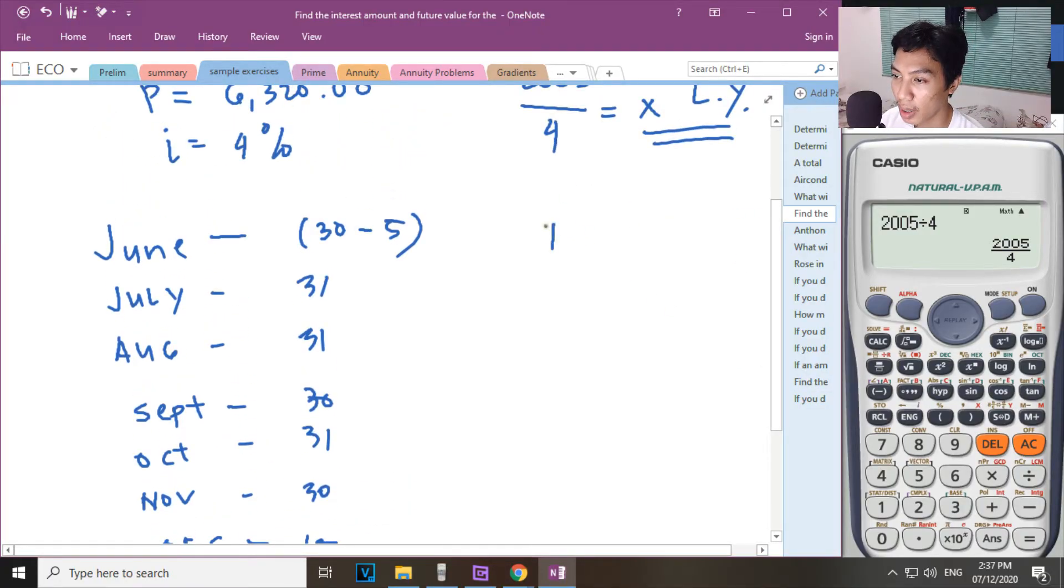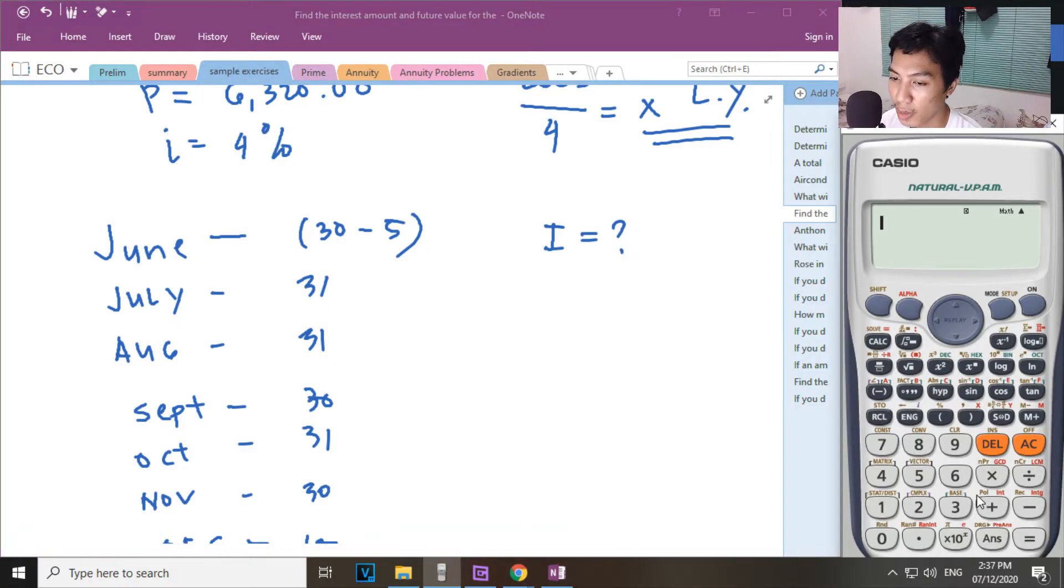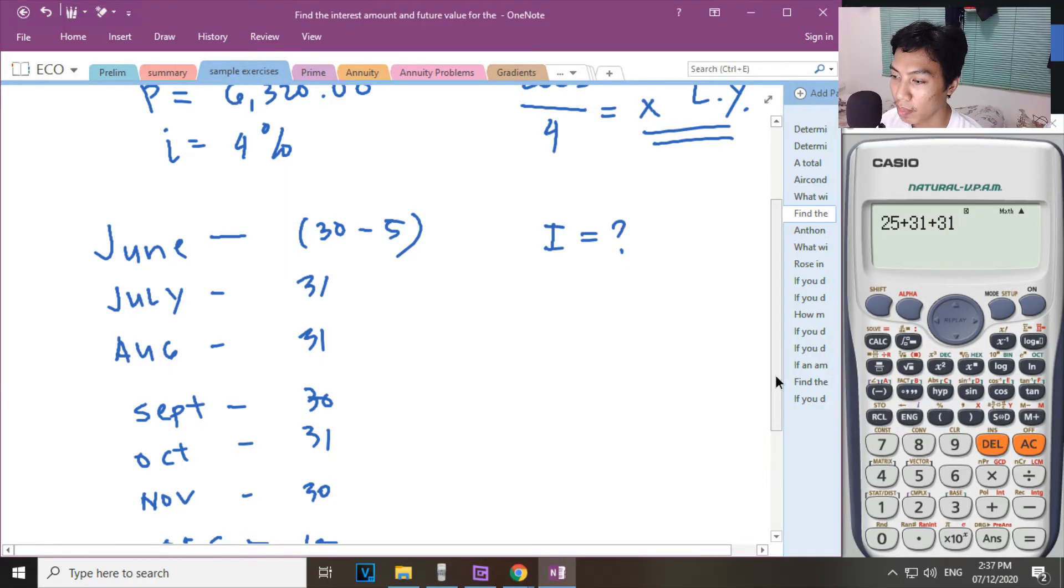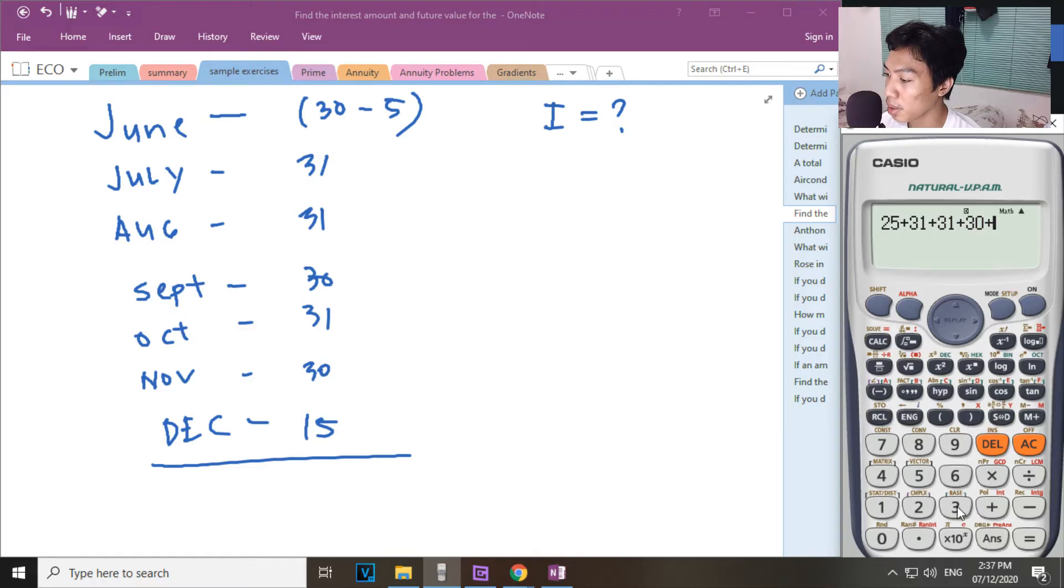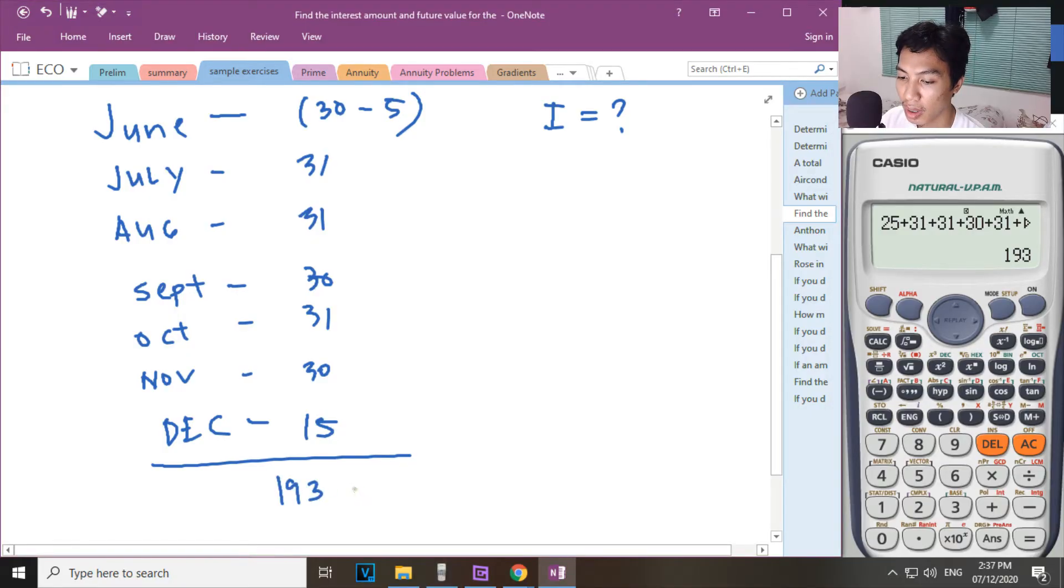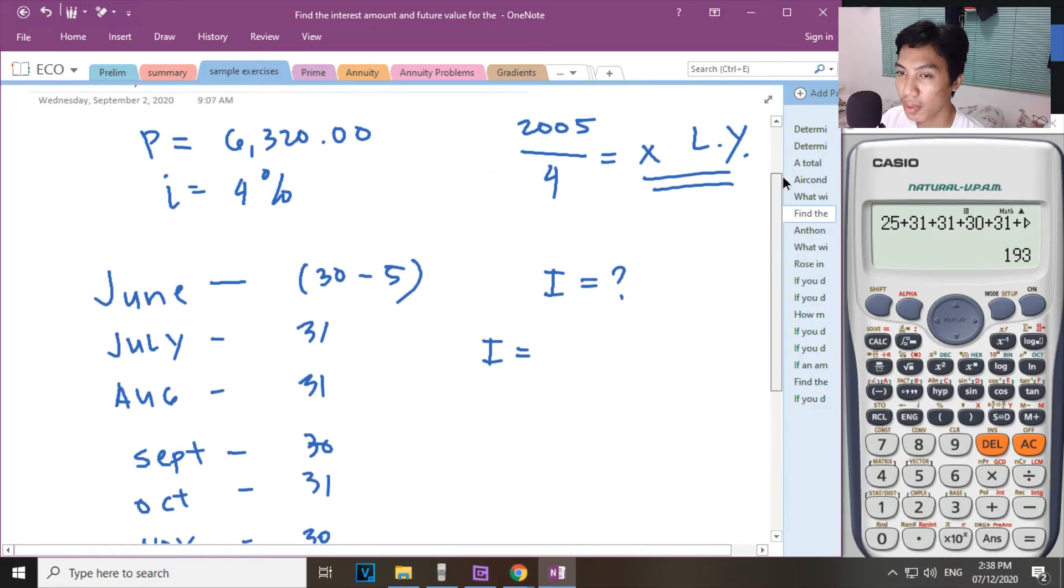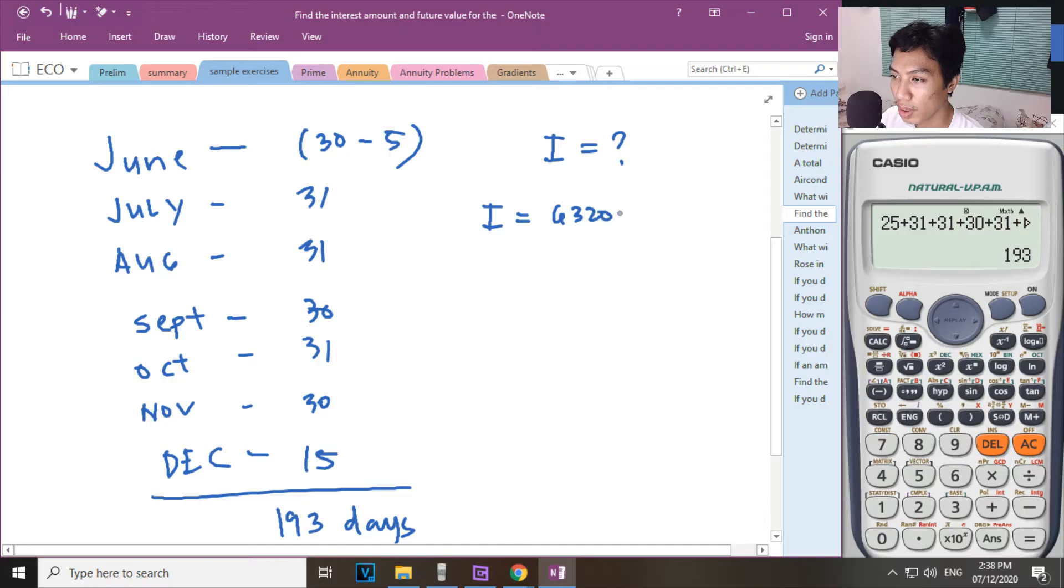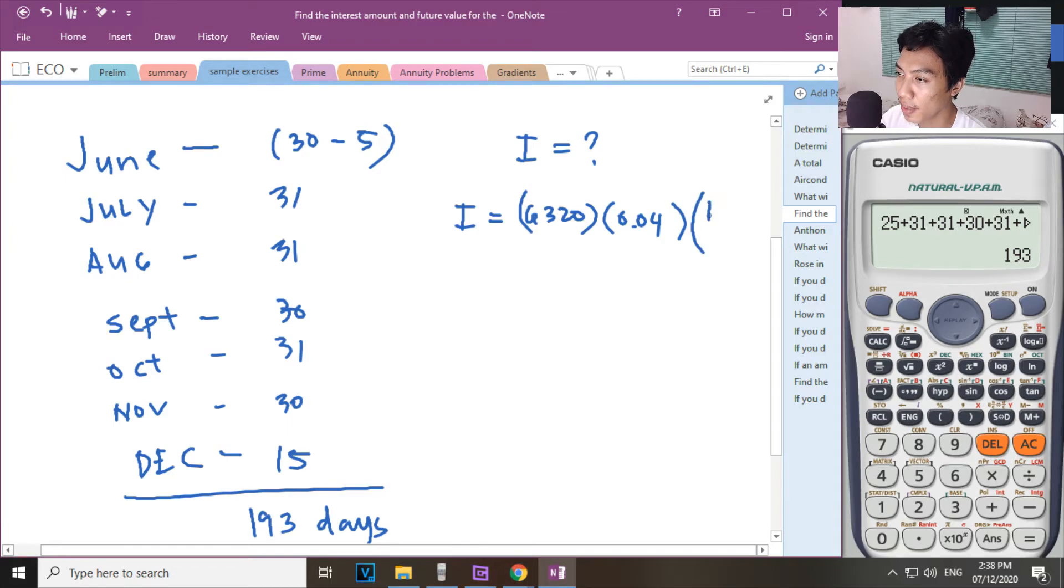So anong inahanap natin? The interest rate na lang muna, I. So let us find the 30 minus 5. That is 25, 5 plus 31 plus 31 plus 31 plus 30 plus 31 plus 30 plus 15. That is 193 days. Ang days mo is 193 days. Exact to, exact.